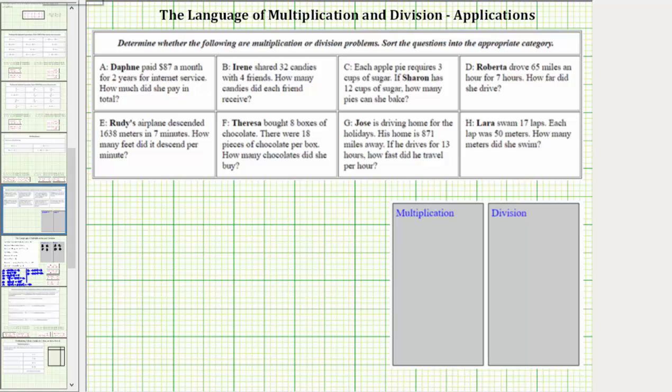For A, Daphne paid $87 a month for two years for internet service. How much did she pay in total? There are 12 months in one year, and therefore there are 24 months in two years. She paid $87 24 times over the two years.